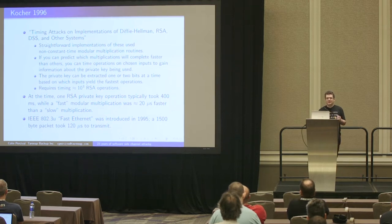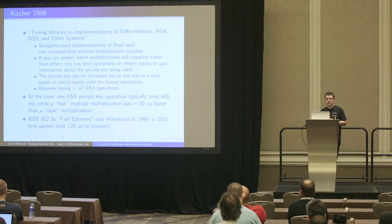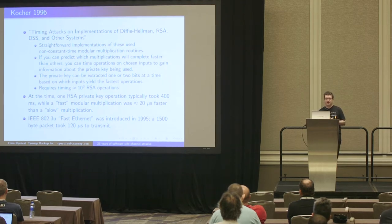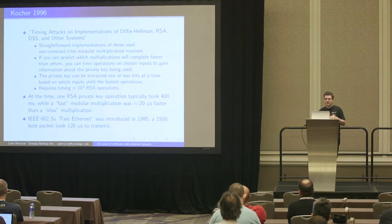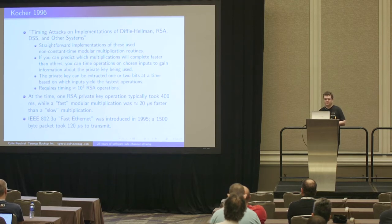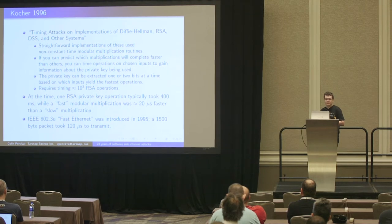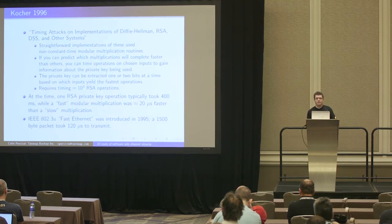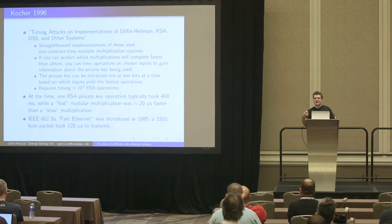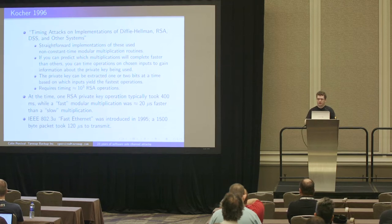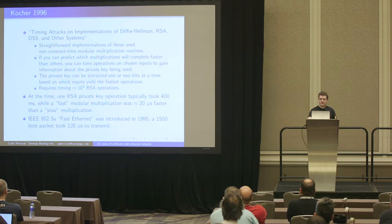So this allowed Kocher to steal an RSA key in about a thousand RSA operations. So this is an attack, but it wasn't necessarily a practical attack. At the time, a private key operation was around 400 milliseconds. The fast modular multiplications were around 20 microseconds faster than the slow ones. So that's a signal which is one twenty-thousandth of the total time being spent on the RSA operation. And to make it worse, networking at the time, fast ethernet had just been released, but a single packet could take 120 microseconds to transmit. So it's an attack, but not necessarily one that you could use over the Internet.